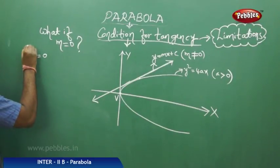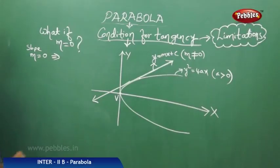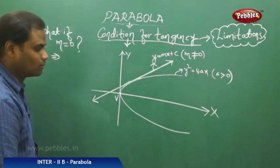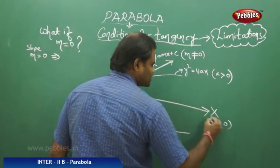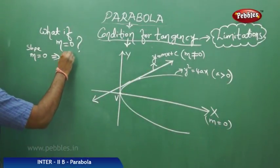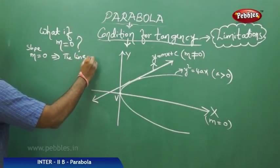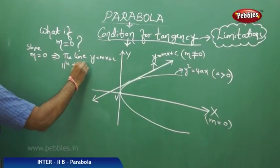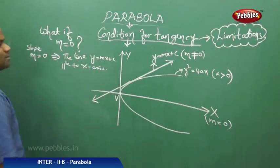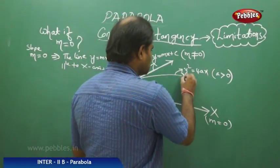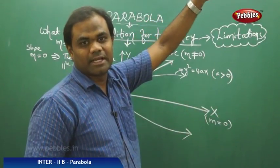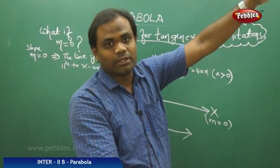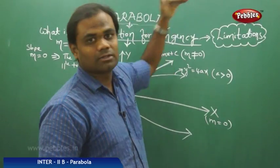m equal to 0, that is slope m equal to 0, implies the line is parallel to the x-axis, because any line parallel to the x-axis has slope 0. This implies the line y equal to mx plus c with m equal to 0 is parallel to the x-axis. But as the parabola extends to infinity, you cannot have a line which is parallel to the x-axis acting as a tangent, because as the parabola extends up or down, it opens up and the line does not touch the parabola.